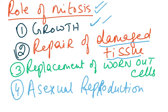Second role: repair of damaged tissue. When a surgeon cuts the skin and stitches it, or when you cut yourself with a knife and the skin heals, that repair happens by mitosis. Remember: it is repair of damaged tissue, not repair of a damaged cell — a cell cannot be repaired.